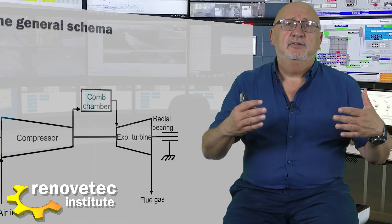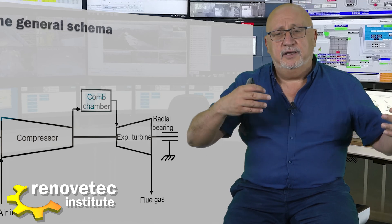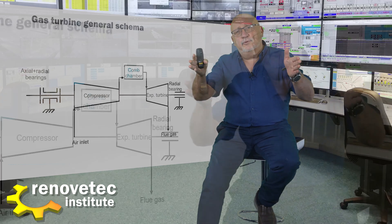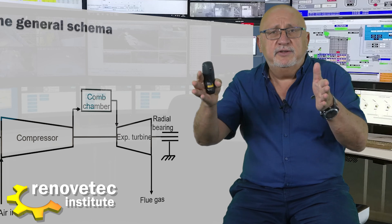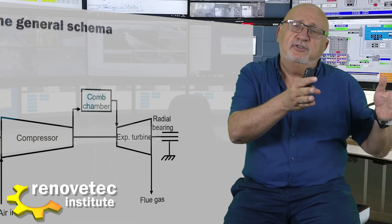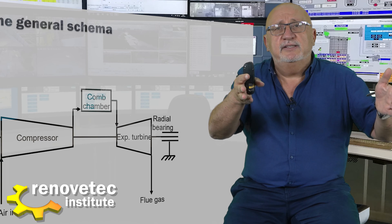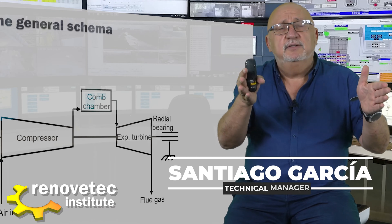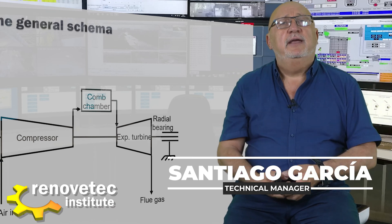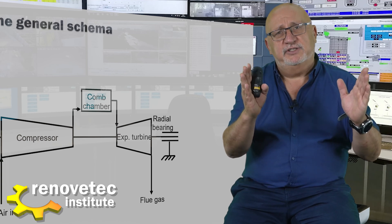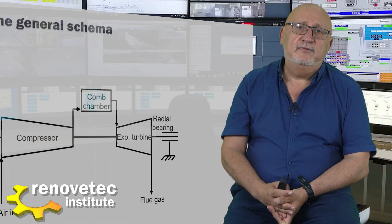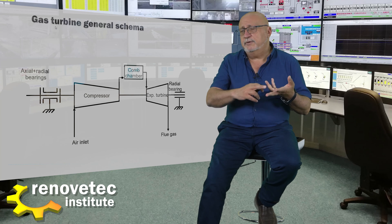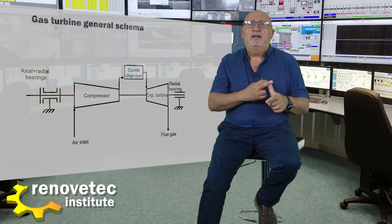The shaft also supports axial forces that try to move it in one direction or another, depending on whether the turbine is starting, running, or stopping. To avoid this axial movement, it is necessary to install another element to fix the position of the shaft — this is the axial bearing or thrust bearing. So for the moment we have: compressor, combustion chamber, expansion turbine, axial bearing, and radial bearing.